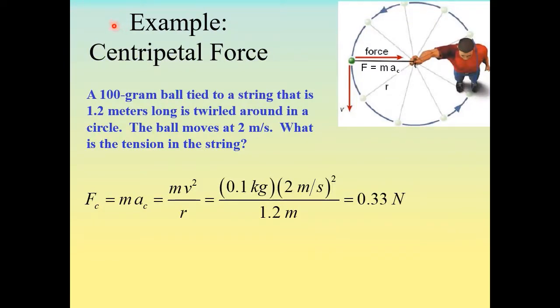So let's look at an example of centripetal force. A 100 gram ball tied to a string that is 1.2 meters long is twirled around in a circle. The ball moves at 2 meters per second. What is the tension in the string? So from the last slide we can write that the centripetal force is equal to ma or better let's write it as m v squared over r because remember the centripetal acceleration is v squared over r. So we can plug in our numbers here.